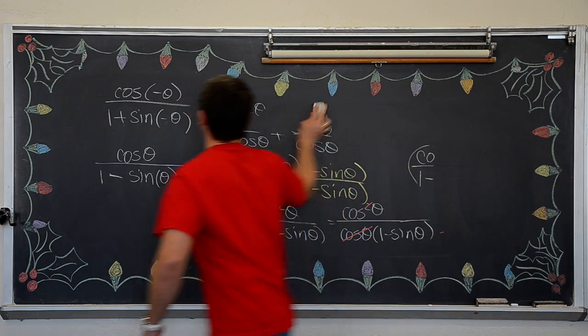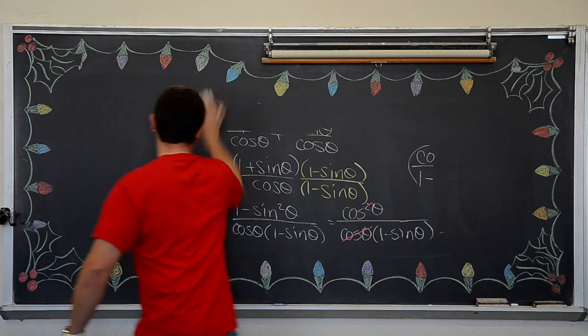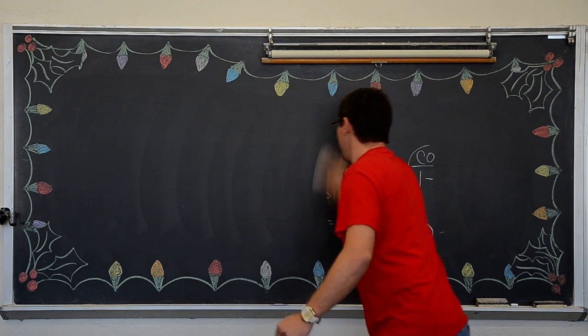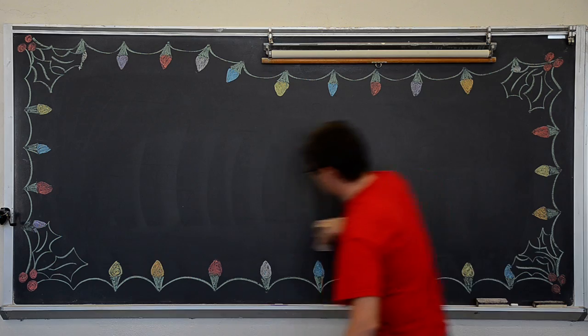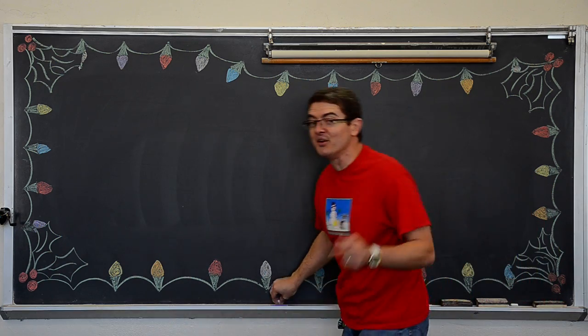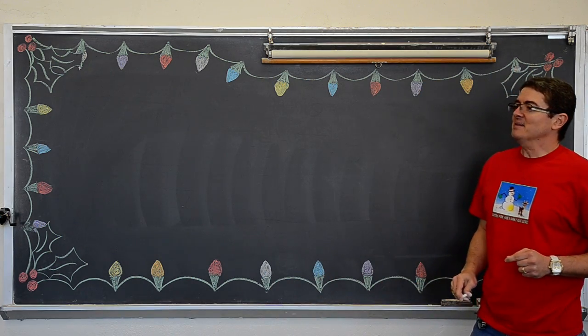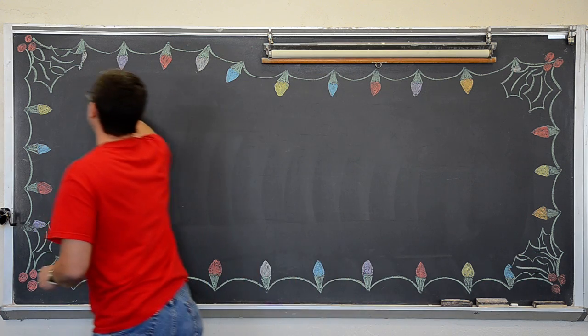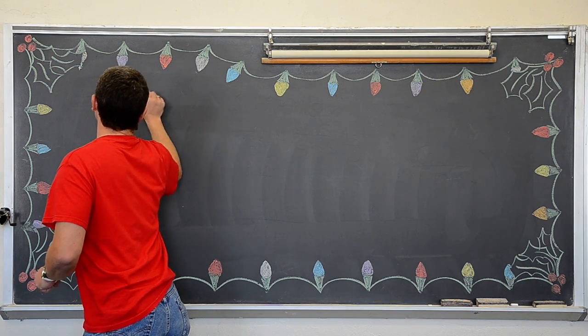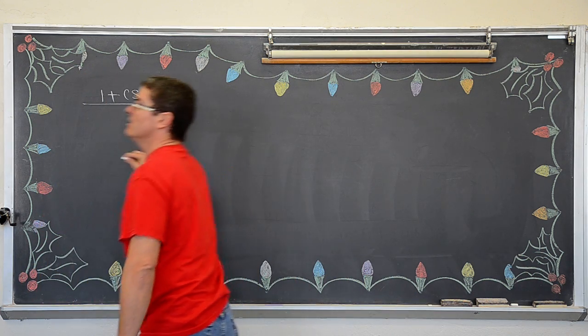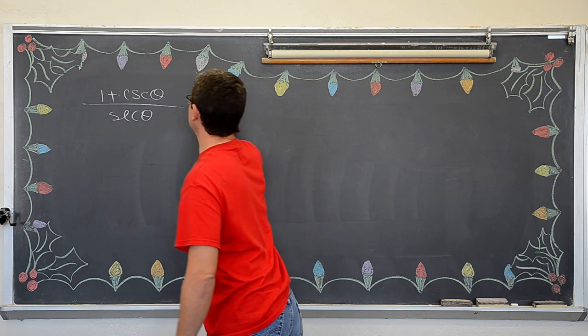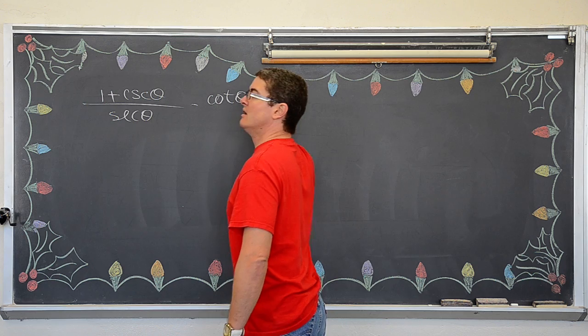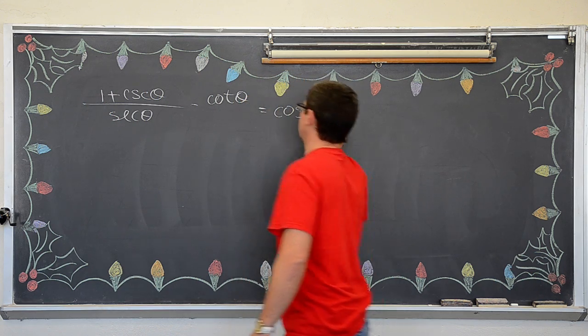You just kind of try different things and do some different substitutions and then all of a sudden the algebra starts going, hey, hey, hey, you are getting close to the answer. Okay. We got one plus cosecant theta over, hmm, secant theta minus cotangent of theta equals cosine.